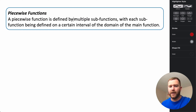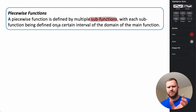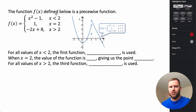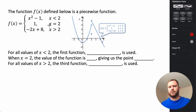Piecewise functions are defined by multiple sub functions, and each sub function is defined over a specific interval or a certain portion of the domain of the main function. In this example, we have a piecewise function f of x — we're given the equation and the curve, and we want to examine how the curve relates to the actual function itself.